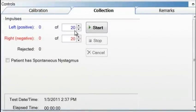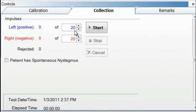The impulse settings define how many valid left and right impulses are required before the test stops automatically. Here you see 20 left head impulses and 20 right head impulses. To change the number of suggested minimum head impulses for the current testing session, click the up and down arrows or type the number in directly.